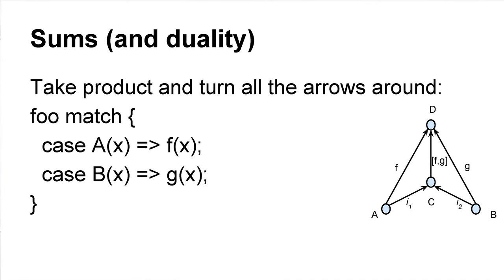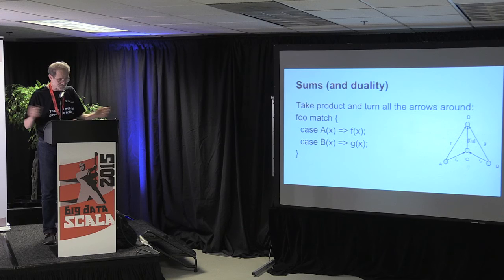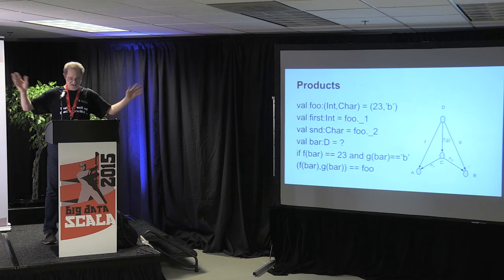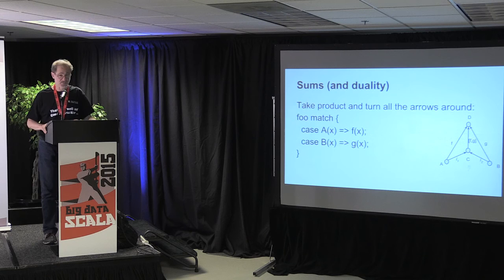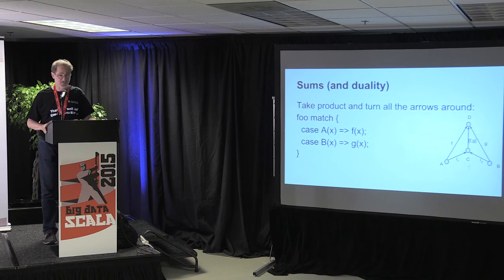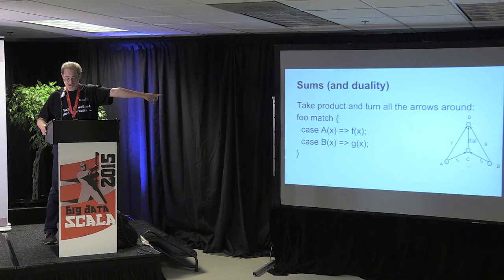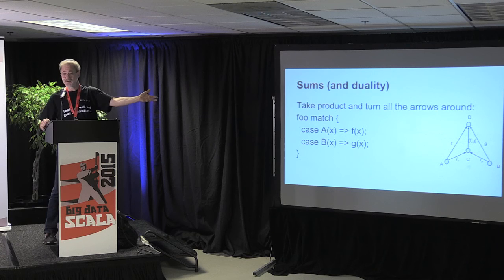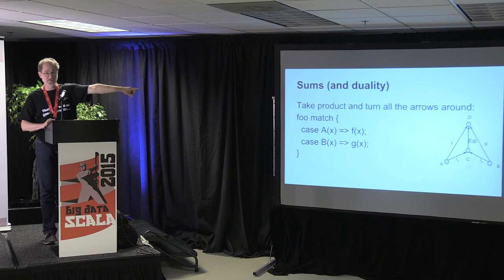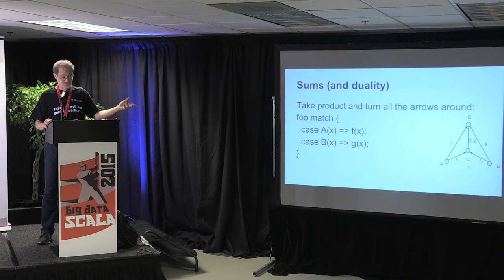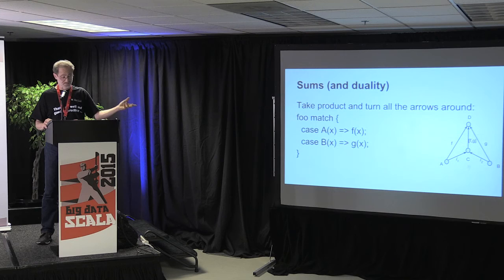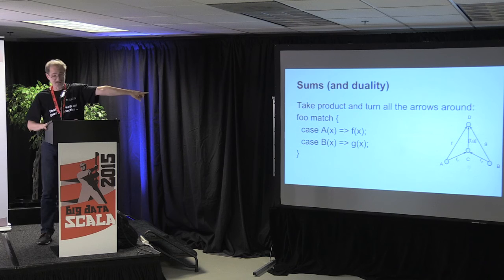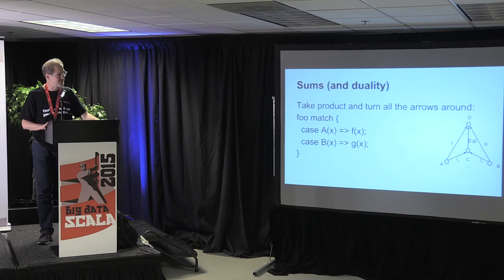One of the funky things in category theory is you can take all the arrows in any categorical construct, turn them around so they face the other way, and get another categorical concept. Here you get sums. Products show up all over Scala and Haskell. Sums are what you get with case classes — particularly sealed case classes. C is either an A or a B; you have to go look inside to find out, which is why you do the match. Here C is a co-limit: if there's some other object you can reach from A and from B, you can always reach it from C.